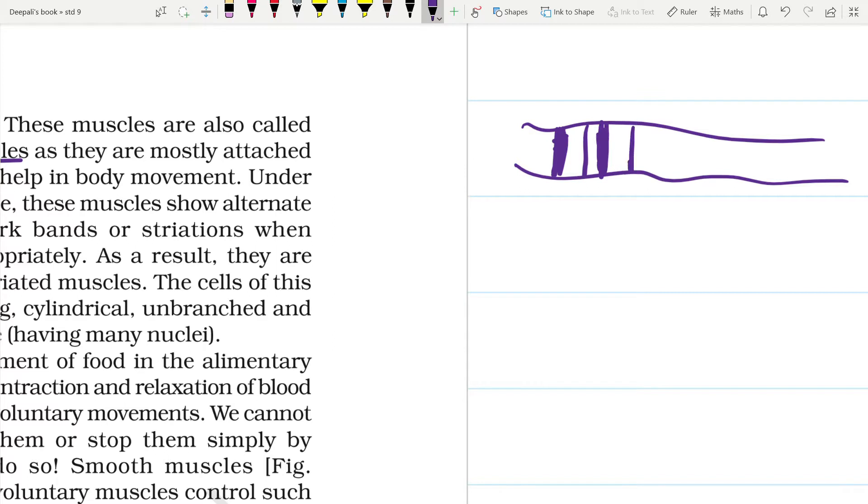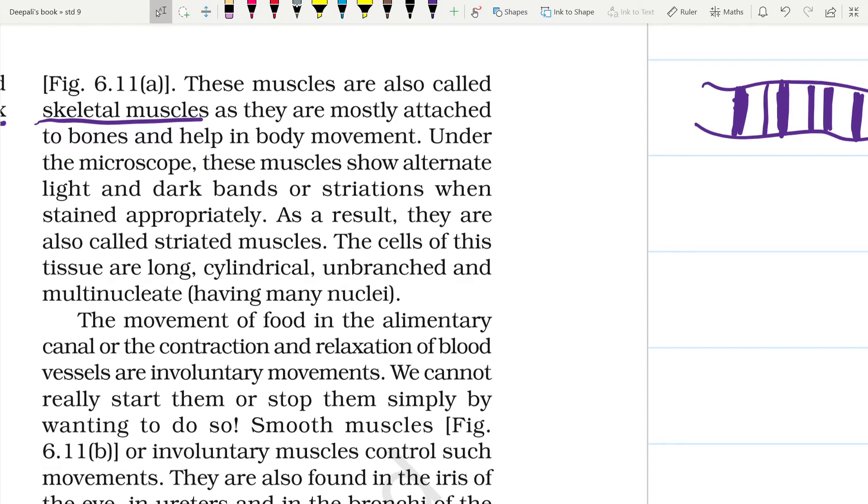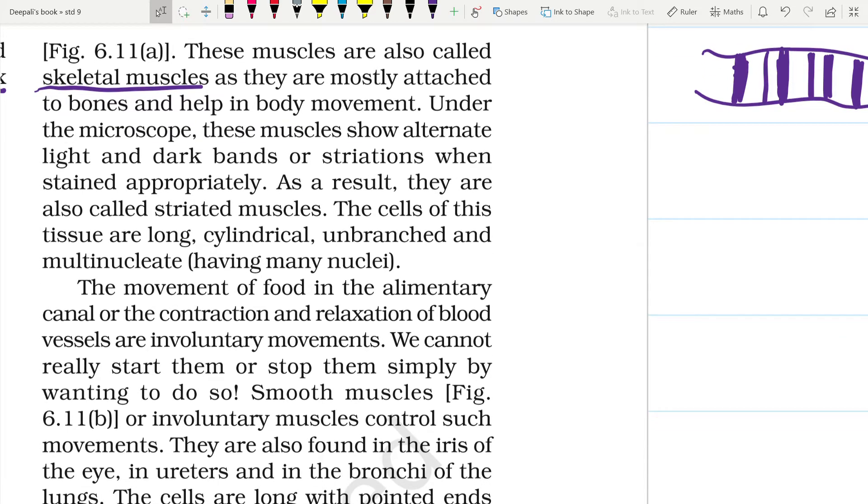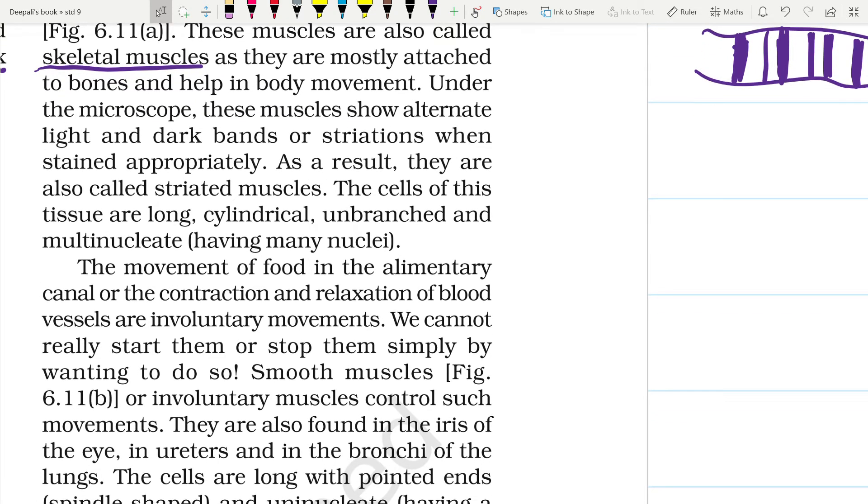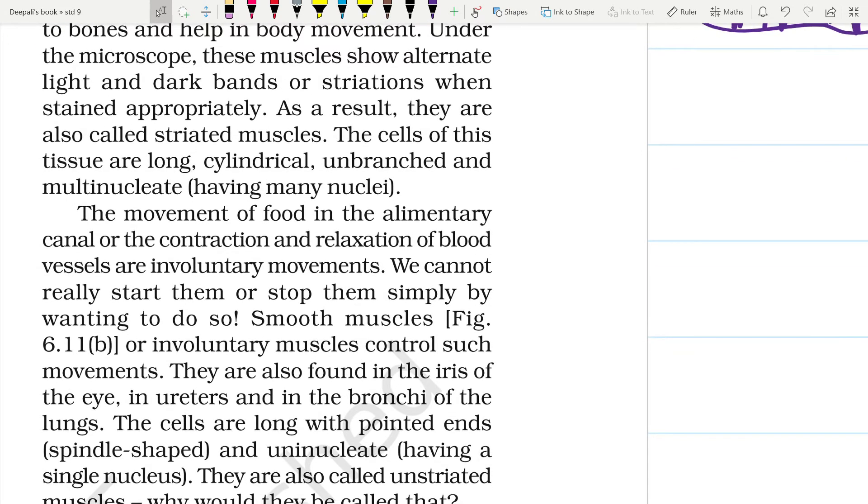And then a lighter band, darker band. Because of this they are called striations or striated muscles. As a result they are called striated muscles. The cells of this tissue are long, cylindrical, unbranched, and multinucleated, having many nuclei. The movement of food in the alimentary canal or the contraction and relaxation of blood vessels are involuntary movements, means you cannot control them.